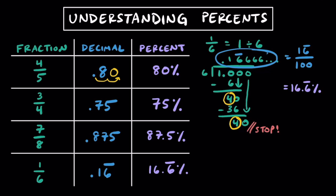Keep in mind that while we can't have a whole number repeat forever, we can have a decimal repeat. Using the shortcut, remember that you can multiply any decimal by 100, or move the decimal twice to the right to get a percent. Sliding the decimal twice to the right for 0.75 gets you 75%, twice to the right for 0.875 is 87.5%, and 0.16 repeating becomes 16.6 repeating percent.